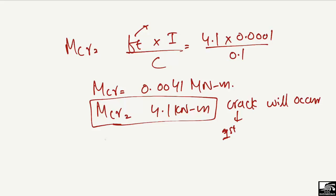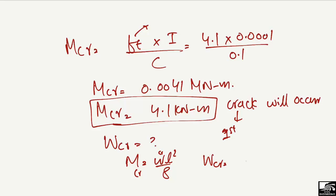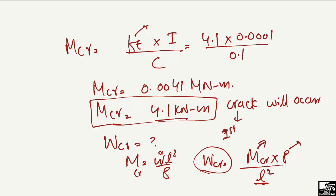Correspondingly, the load at this point is known as the cracking load. To find the cracking load, we use the simply supported beam moment formula M = WL²/8, rearranged as: W_cr = 8 × M_cr / L². Here 8 is a constant and L is the span length of the beam. So you can also find out the cracking load, which is the load at which the first crack will start.